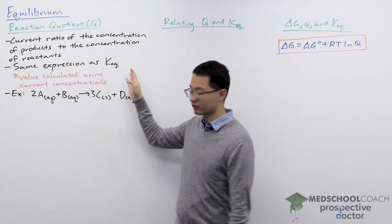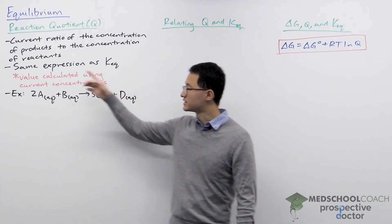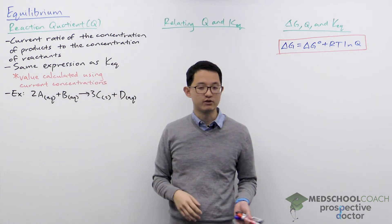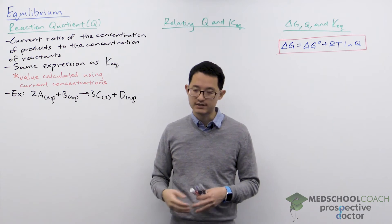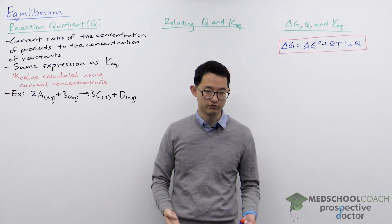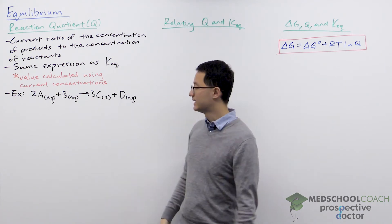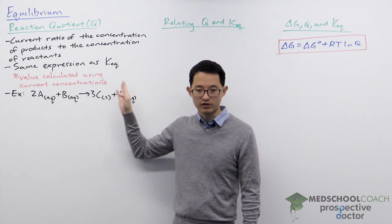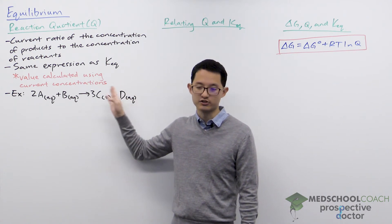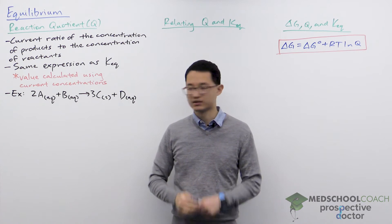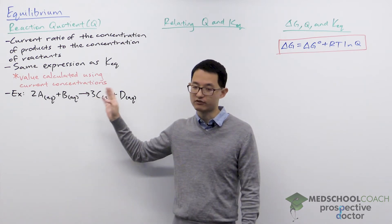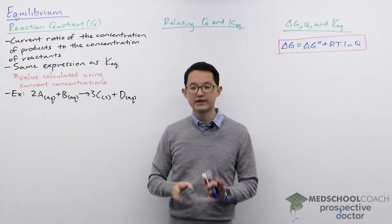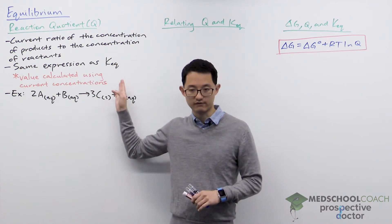When writing the expression for Q, it's the same expression as K_eq: products over reactants, stoichiometric coefficients become exponents, and solids and liquids are excluded. The main difference is that you calculate Q using the current concentrations of reactants and products — your reaction does not have to be at equilibrium. Whatever the current concentrations are, you plug in those values to get the value of Q.